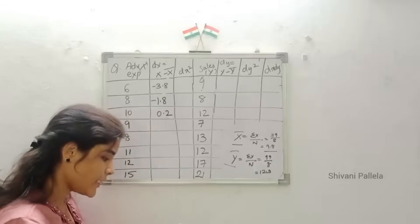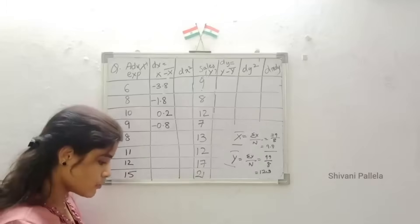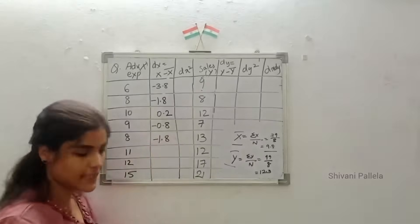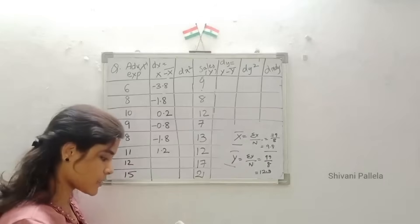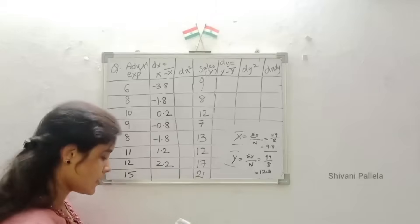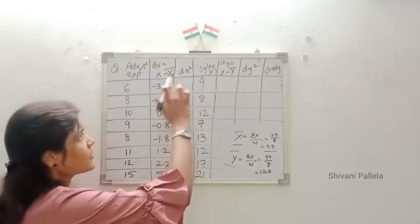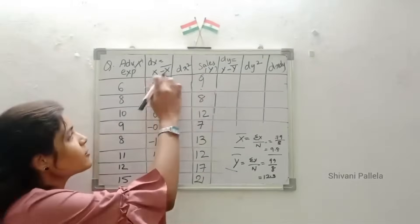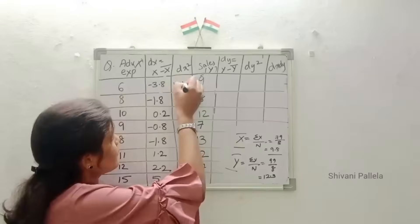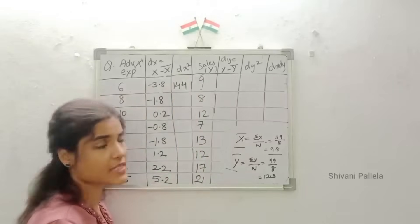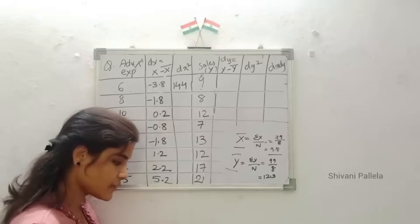Continuing dx values: 11 − 9.8 = 1.2; 12 − 9.8 = 2.2; 15 − 9.8 = 5.2. These are positive, so no minus symbol. Now squaring for dx²: (−3.8)² = 14.44; (−1.8)² = 3.24; (0.2)² = 0.04; (−0.8)² = 0.64; (1.2)² = 1.44; (2.2)² = 4.84; (5.2)² = 27.04. Note that squaring removes minus symbols.